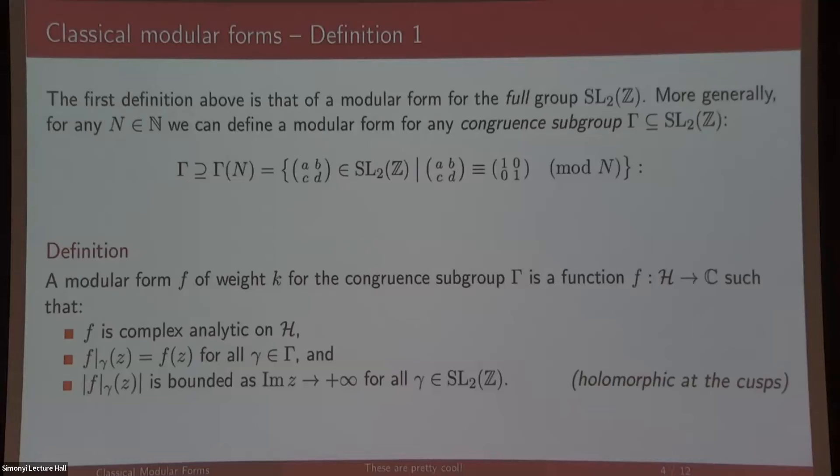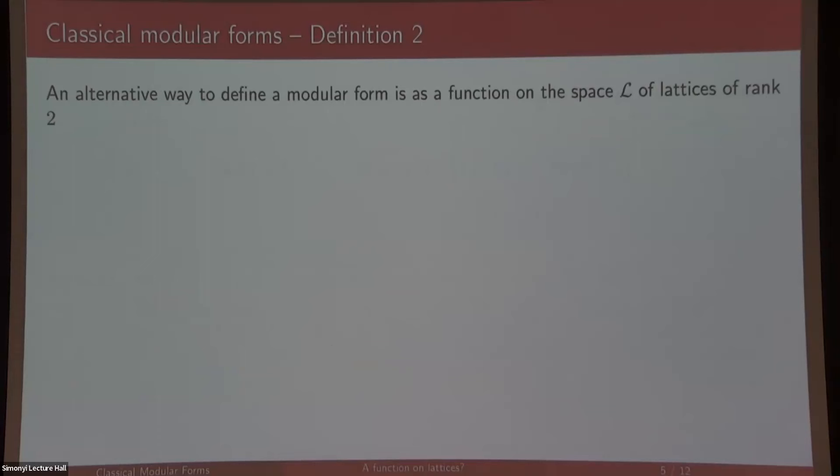Now there's a different definition for classical modular forms which I actually prefer, defining them as functions on the space of lattices of rank 2. So that's a rank 2 additive subgroup. This would be a lattice. You would have them as functions on the space of lattices, so as the lattice varies your function changes.